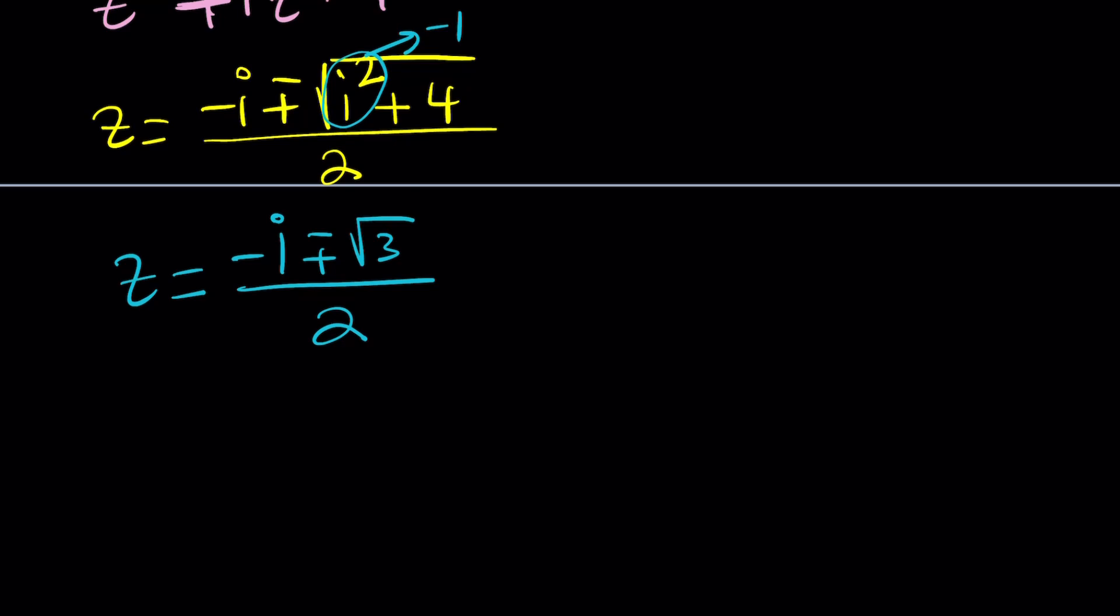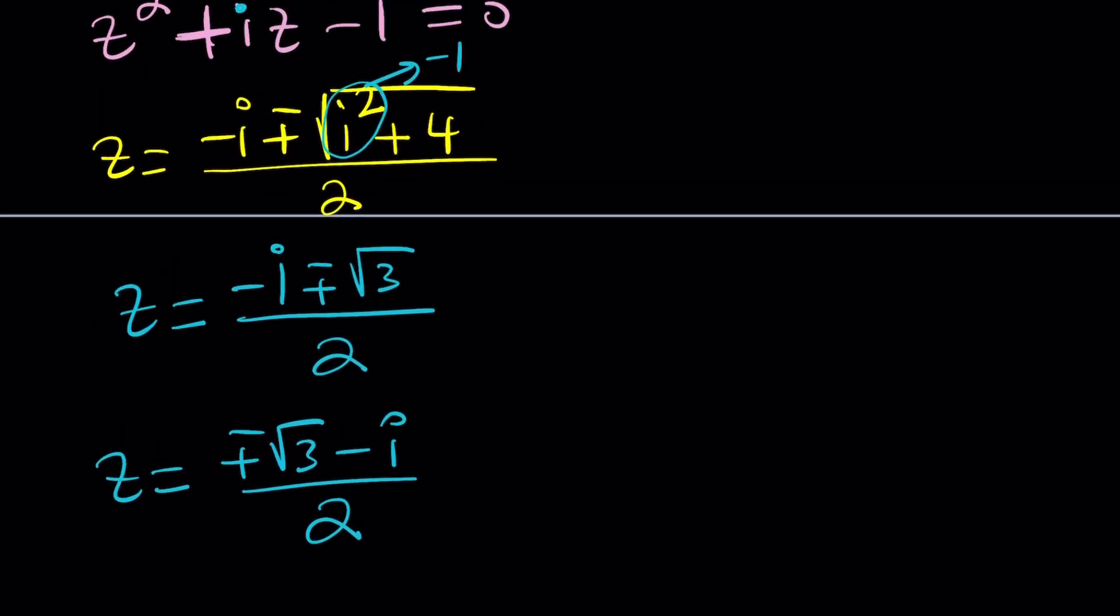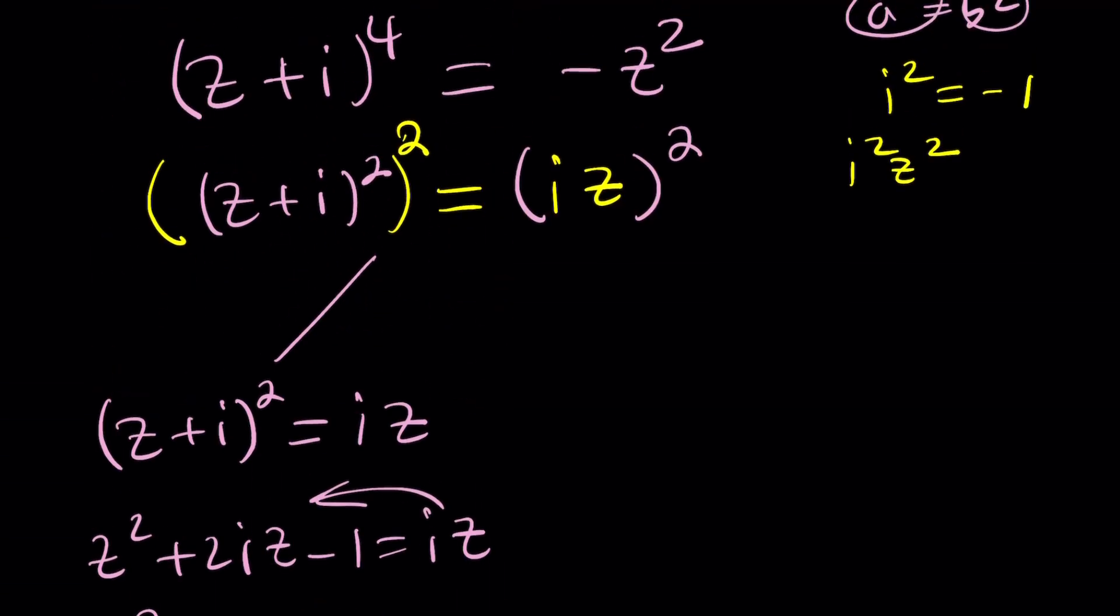So now, that's the answer, but we can kind of write it like plus minus square root of 3 minus I over 2, because the real part is what changes the sign. And obviously, you can write this separately as well, but let's leave it at that and solve the other case.